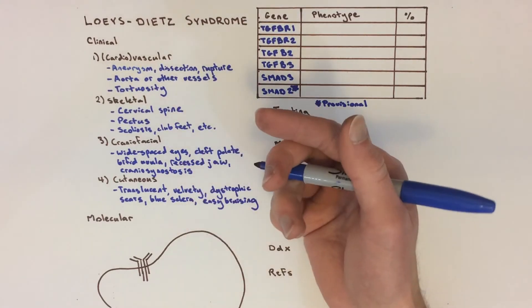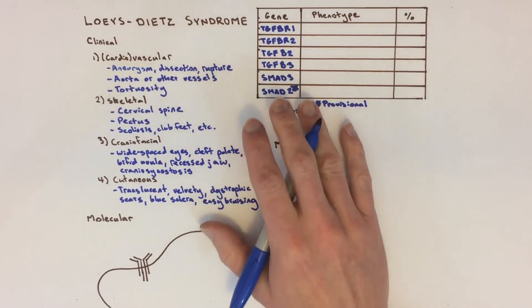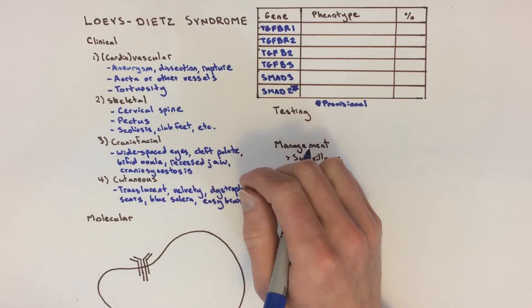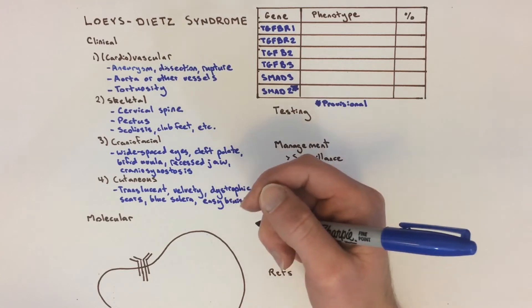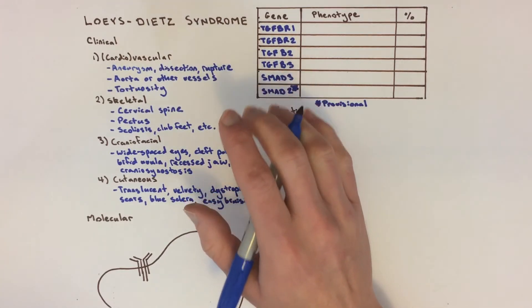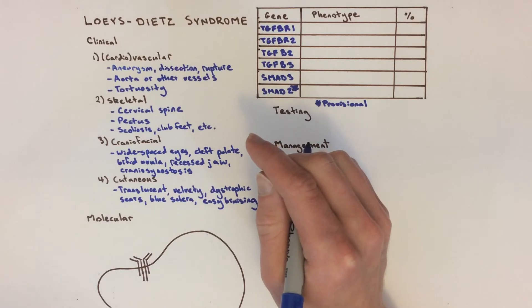Very rare manifestations can include pneumothorax, dural ectasia, which is a redundancy to the sac surrounding the spinal cord, Arnold-Chiari type 1 malformation where the lower part of the cerebellum extends into the foramen magnum, and rupture of the spleen, bowel, or uterus.